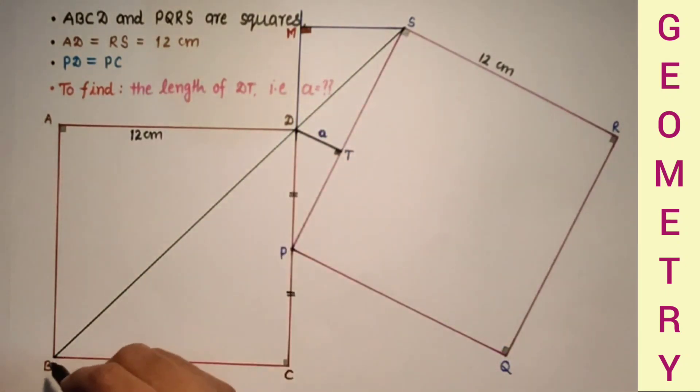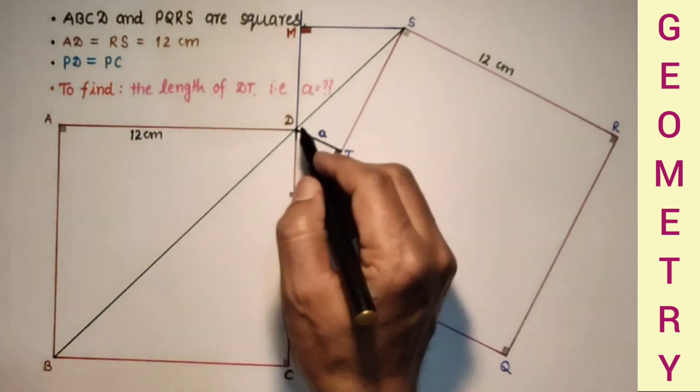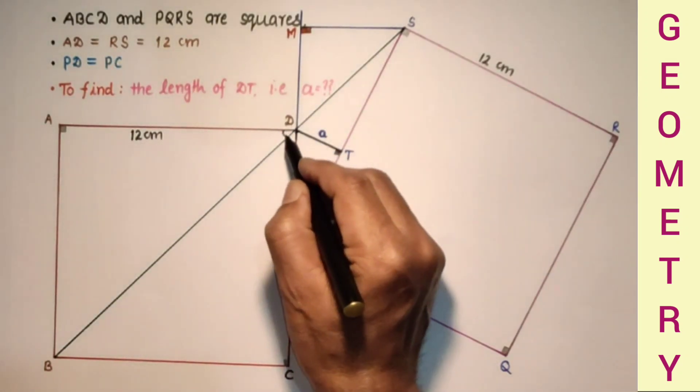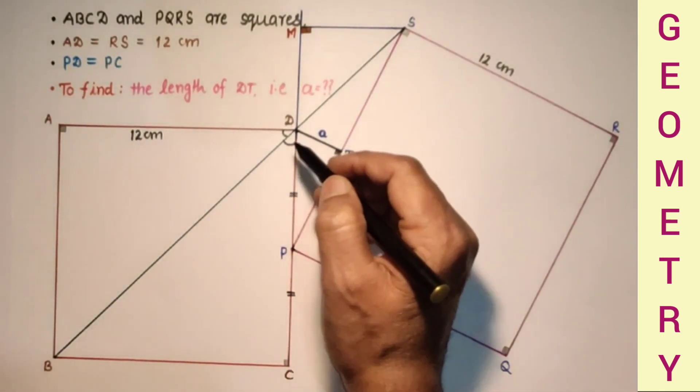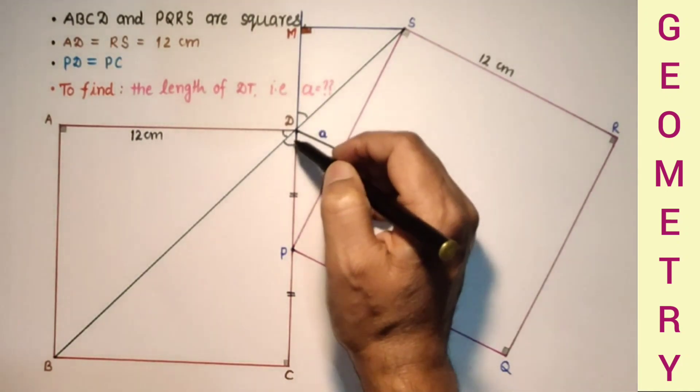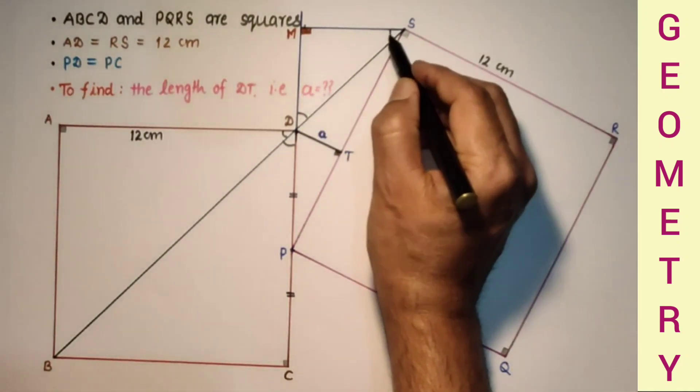Now, this diagonal bisects this right angle. This is 45°, this is 45°. And this is also 45° because of vertically opposite angles. This is 90°, so this will also be 45°.